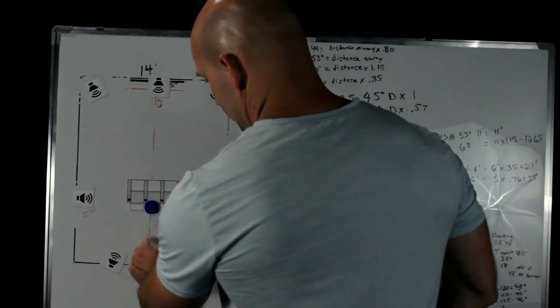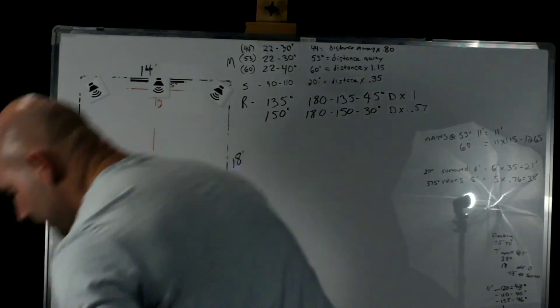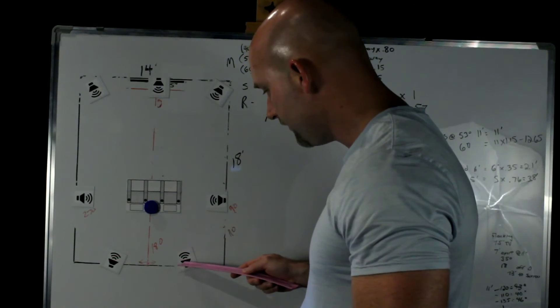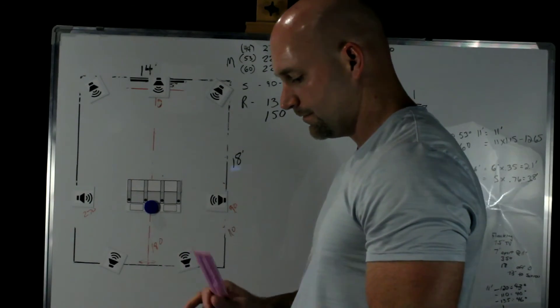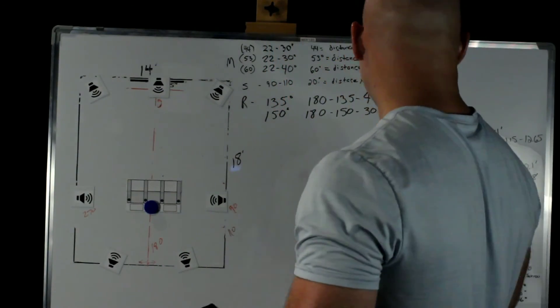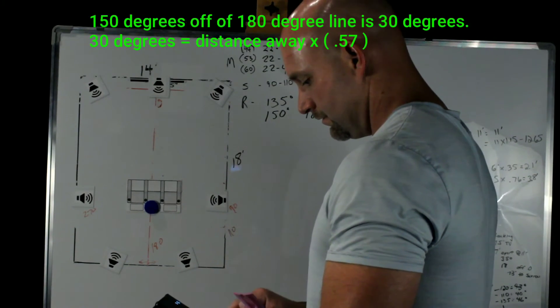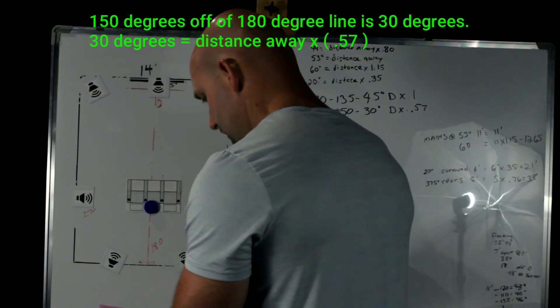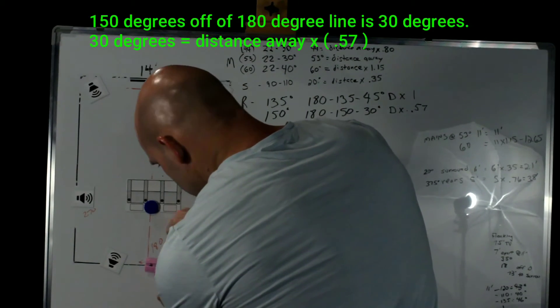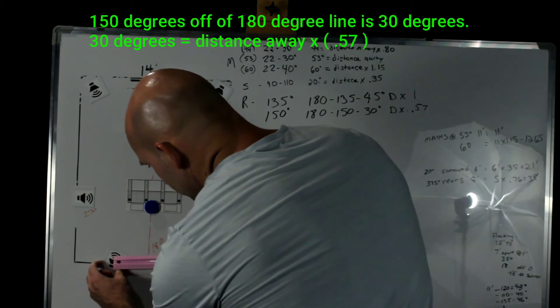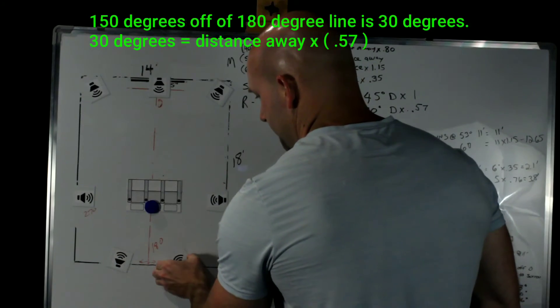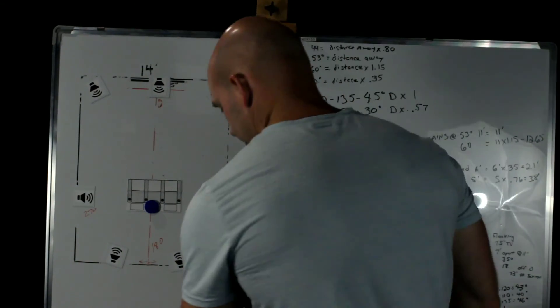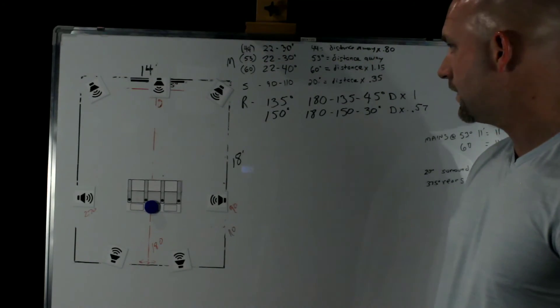So to calculate the 30 degrees off of this line, we're going to take the distance away, which we've already determined in this instance. Remember we're going off of where the speaker baffle is, the front of the speaker, that distance is going to be 5 feet. So we're going to go 5 times 0.57. And that's going to be 2.85 feet. So almost 3 feet. And that's going to put our rears right around there. And now we've got a 60 degree difference between all of our speakers.